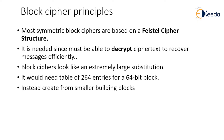Most symmetric block ciphers are based on a Feistal cipher structure. This is needed because the output of the Feistal cipher structure must be able to be decrypted to recover the plaintext at the receiver's end. Block ciphers look like extremely large substitutions — when it comes to the encryption process they undergo a substitution process.